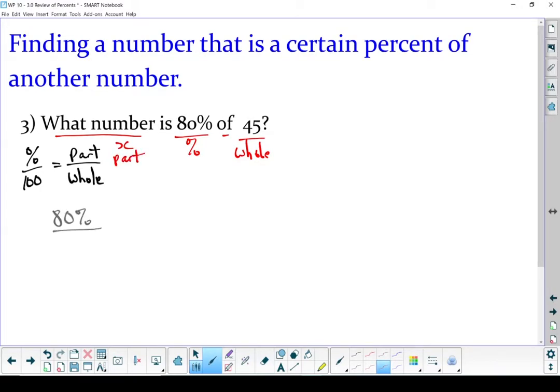80% is my percent. My question always has 100 on it. 45 is my whole. And I want to know what is the part that makes up 80% of 45. Cross-multiply. 100 times x gives me 100x. Equals 45 times 80. Let's multiply those out. 100x equals 3,825.